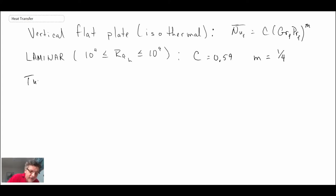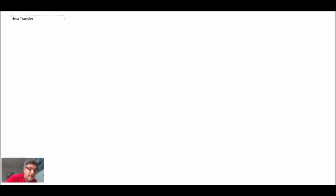If you have turbulent flow, our coefficients are going to change. We already said that M would be one-third, but C would be 0.10. Those would be the values of C and M for a vertical flat plate in the case of it being isothermal, so constant temperature. There are a couple of other relationships that exist, and I will provide those now.